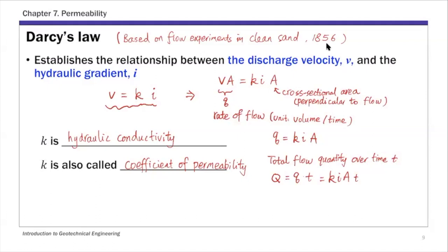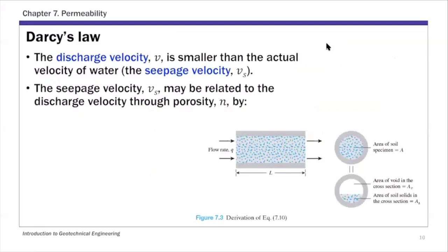Basically, that's the velocity of flow you measure in your experiments — you can call it the apparent or overall velocity. This is Darcy's velocity. And this velocity v is not the actual flow velocity inside soil particles or inside soil specimens. The actual velocity of water inside the soil we call seepage velocity.